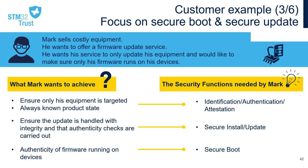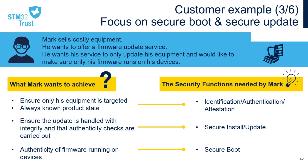Finally, he needs to identify and authenticate his equipment into which he will deploy his service. Mark has identified his assets on the left, and he has a lot of threats to address. Using the countermeasures on the right from the STM32 Trust framework, he can mitigate the vulnerabilities of product tampering, software being stolen, board-level attacks in the field, and communication channels being compromised.